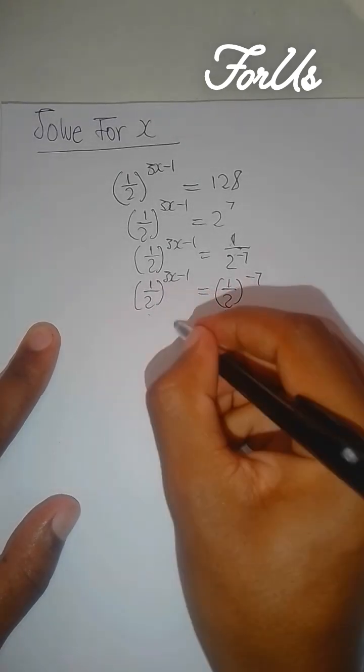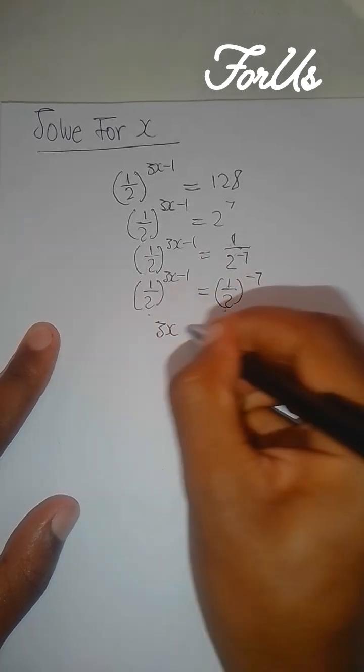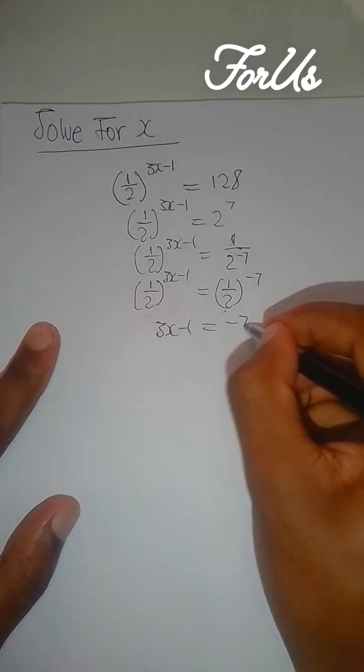Then the bases are the same. It's going to be 3x minus 1 equals negative 7.